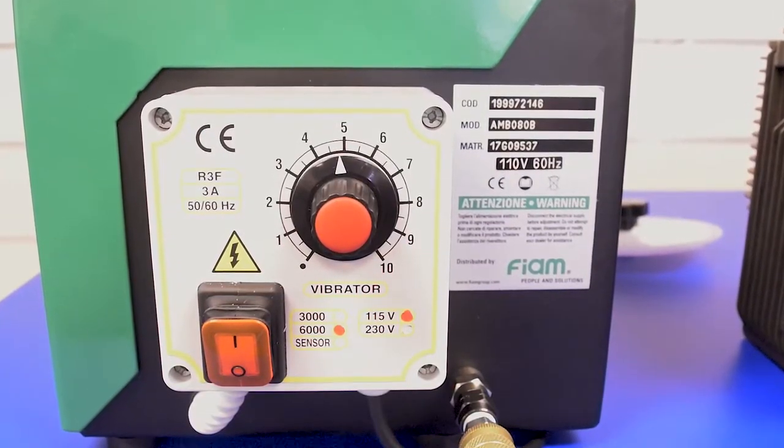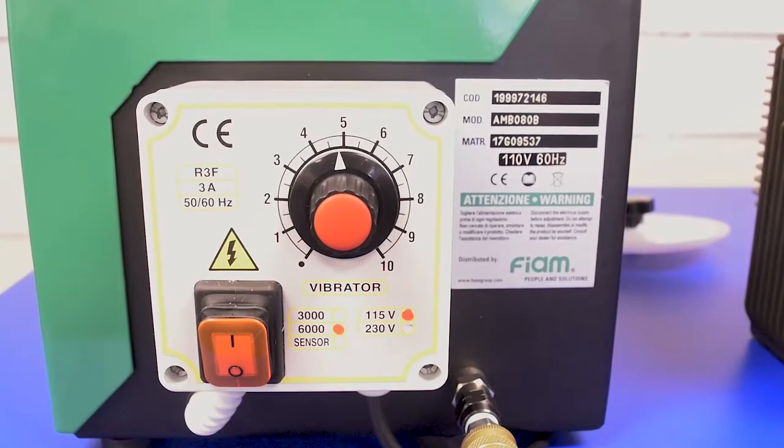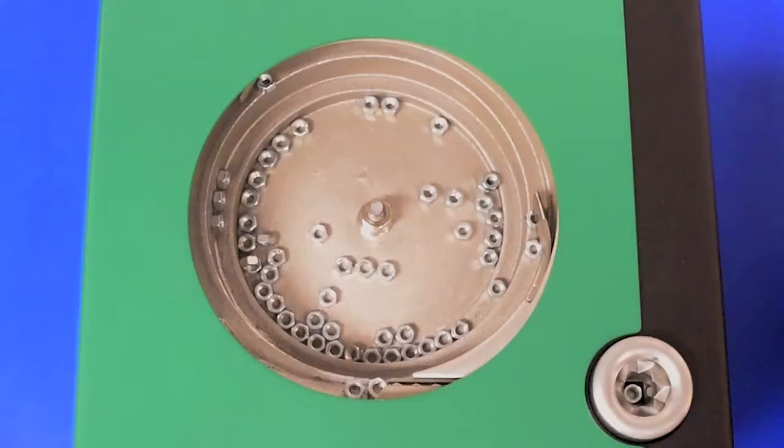The on-off switch is located on the front face as well. Now let's look inside the bowl. From this angle we are looking down into the vibratory bowl. As you can see there are already nuts inside the bowl.